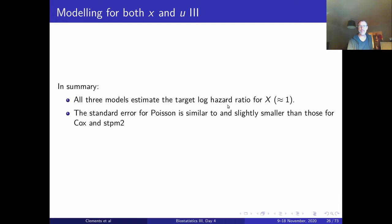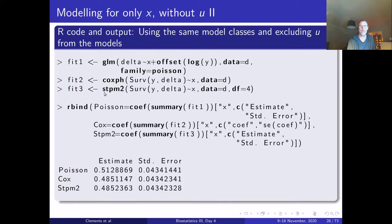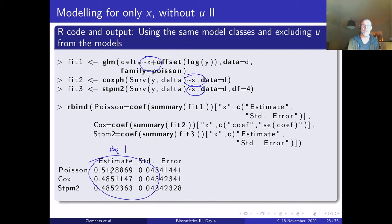In summary, all three models estimate the target log hazard ratio approximately equal to one, with similar standard errors. Now modeling only for x without u: the code is the same except we only adjust for x. The results are very different — the estimated coefficient is not close to one. These are called marginal hazard ratios. Note that u is not a confounder; it is only a covariate associated with the outcome.